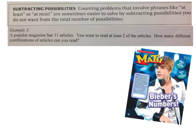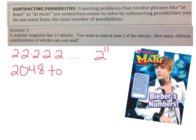If you think back to what we learned a couple days ago, we're going to read at least two of the articles, and it has 11 articles. We could read two, or two different ones, or two different ones, and there's 11 different articles. It's 2 times 2, 11 times. 2 to the 11th power. There are 2,048 total combinations of articles that we could read.